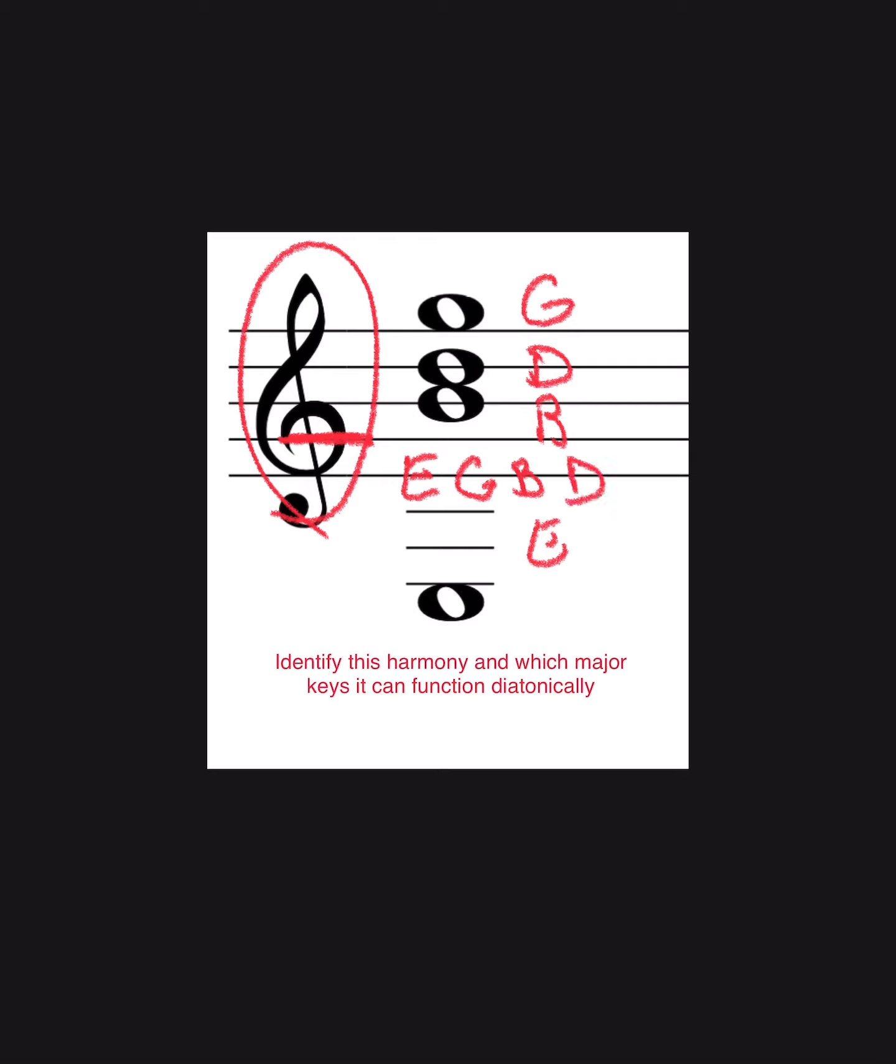The next step is to look at the intervals. E up to G is three half steps, that's a minor third. G up to B is a major third, four half steps. And then B up to D is a minor third as well, three half steps. So we've got a minor third plus a major third plus another minor third. This is the formula for a minor seven chord.